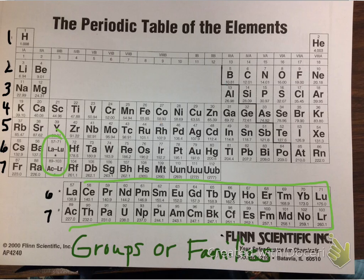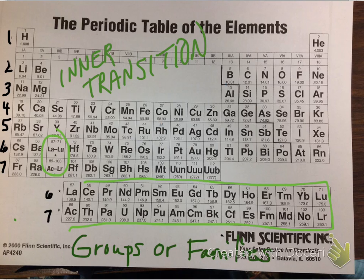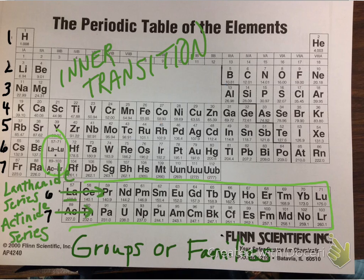The two bottom rows come from inside the periodic table — they are a continuation, simply placed there for convenience so that the periodic table is not too wide. These are referred to as the inner transitions, with the upper row starting near lanthanum as the lanthanide series, and the continuation of period 7 as the actinide series. Many elements in these two series are radioactive.